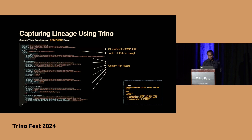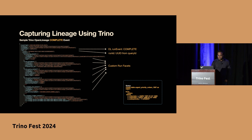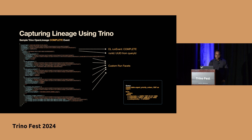Let's look at an example. We have a sample Trino CTAS query that selects data within a particular date range and dumps it to a table. Once the CTAS query is completed, there is a corresponding open lineage COMPLETE event. The spec includes an event time, an event type (COMPLETE), and a run ID which is a unique identifier generated from the query ID. There are also custom run facets explaining the query plan, query statistics, processing engine versions, and internal platform context.